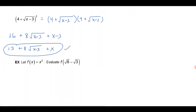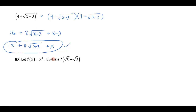Let's do one last example. We have f(x) = x² and we're asked to evaluate f(√6 − √3). Remember that this notation means we plug (√6 − √3) into the function — this function simply squares whatever you put into it. So f(√6 − √3) means we square (√6 − √3).